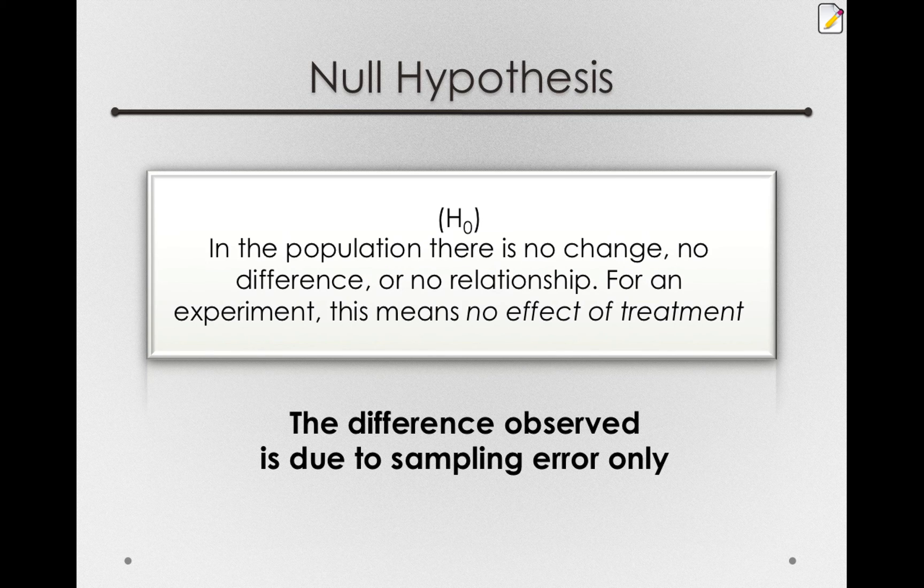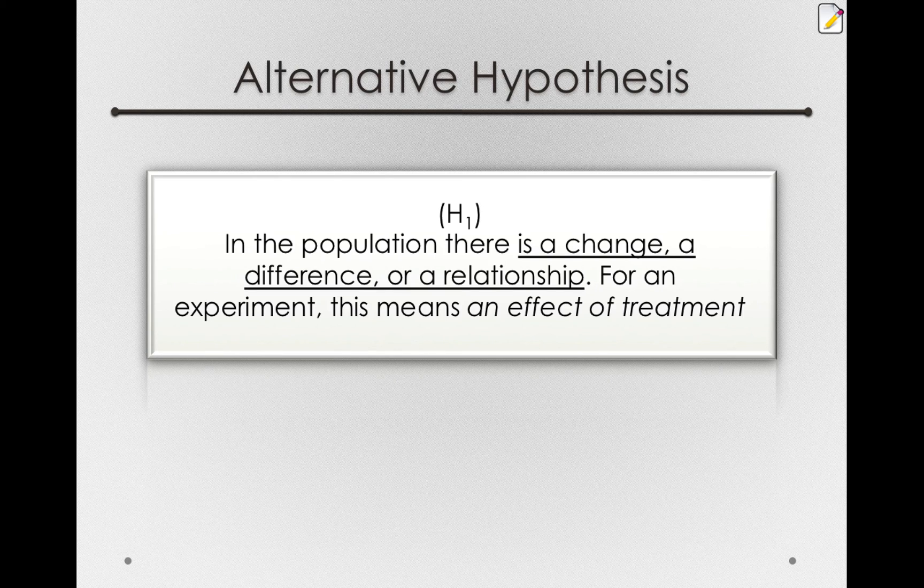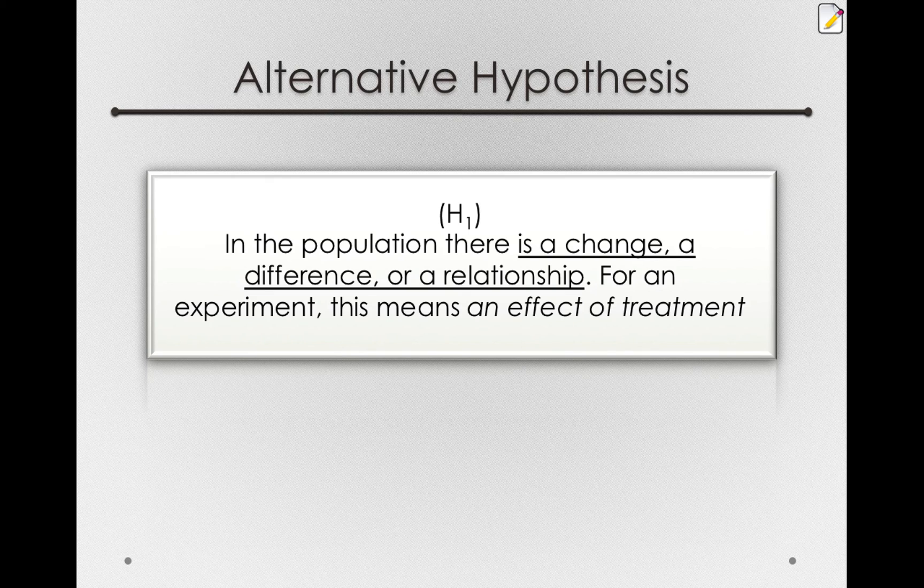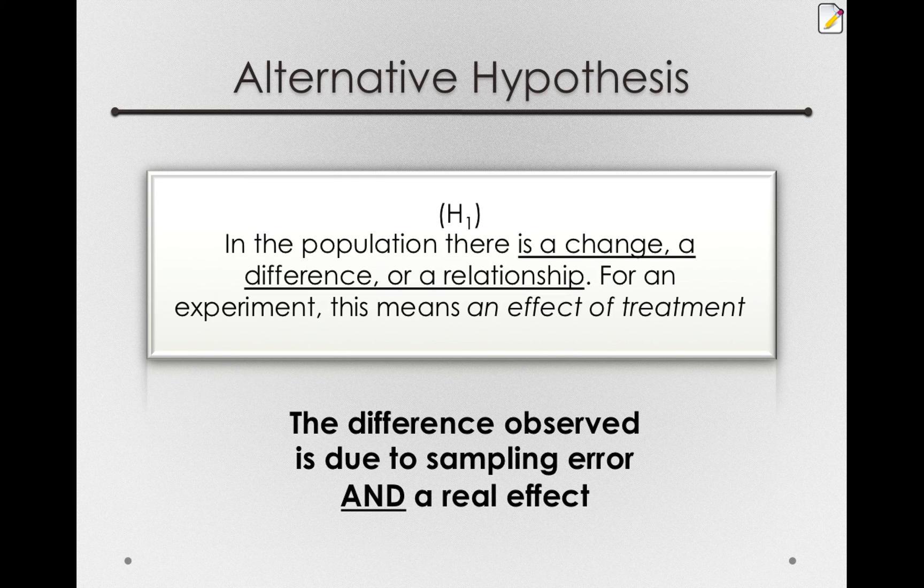On the other hand, the competing explanation to the null hypothesis is the alternative hypothesis, or H sub 1. This states that in the population, there is a change, is a difference, or is a relationship. For an experiment, this means an effect of treatment. The alternative hypothesis can also be thought of saying that the difference we observe is due to sampling error, which we know will always be there, plus some real effect.